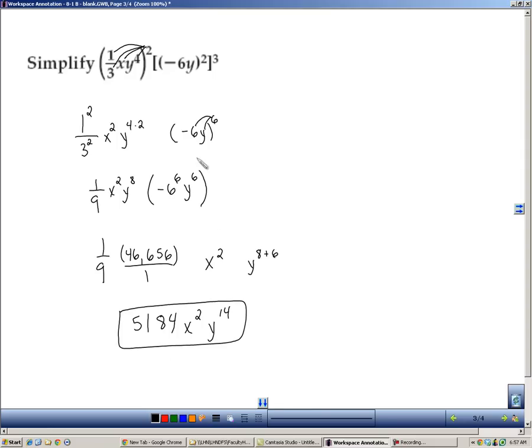So this is an example in which we use all three of our rules. We use the rule where we bring an exponent in, we use the rule where we bring a power to another power and multiply, and we also use the rule where we multiply bases that are the same and we have to add their exponents.